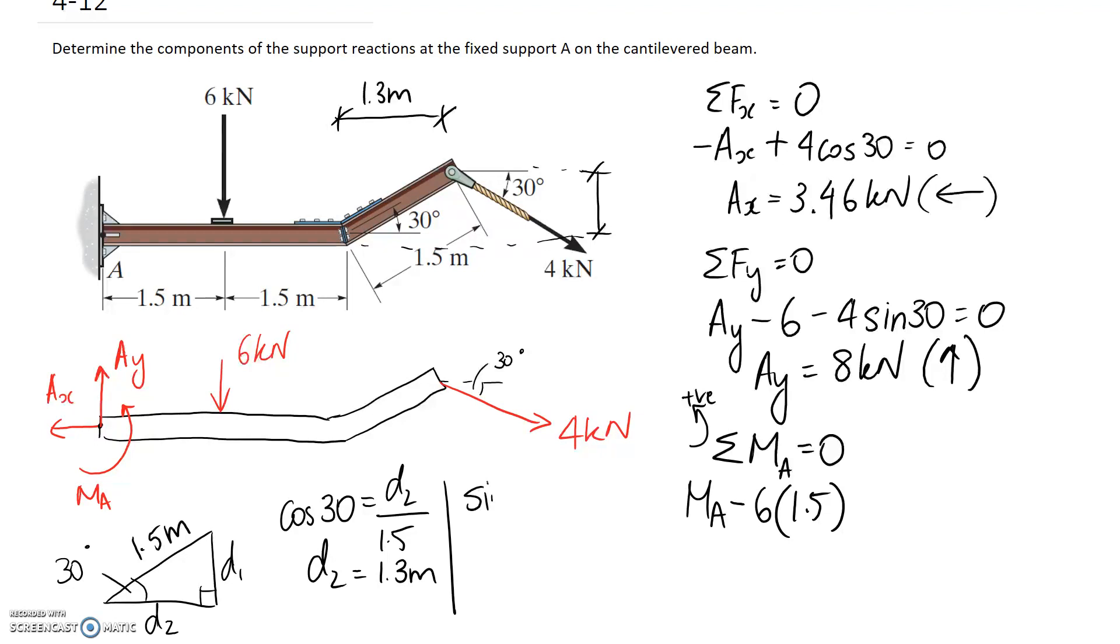And if we want the y component we need to do sine which is the opposite over the hypotenuse so that distance works out to be 0.75 metres which we can label in here.